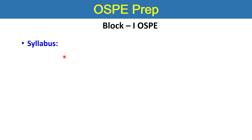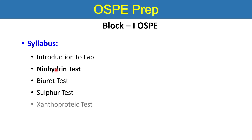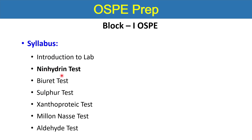The syllabus of Block 1 includes introduction to lab materials, in which you will see different types of instruments, plastic wares, and glass wares. Then you will study about the ninhydrin test, biuret test, sulfur test, xanthoprotic test, and melanin-Sance test, along with the aldehyde test. In this section we will study about the ninhydrin test only — the questions, VIVA, and procedures related to the ninhydrin test.